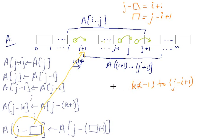We can very easily write the algorithm like this: for k = -1 to j-i+1, A[j-k] is updated by A[j-(k+1)].